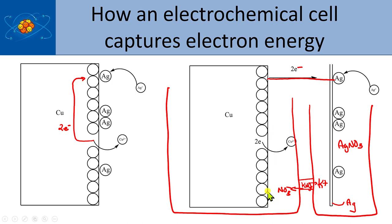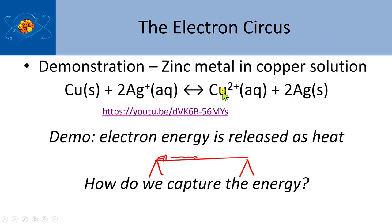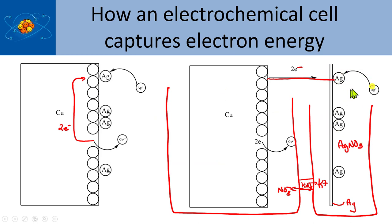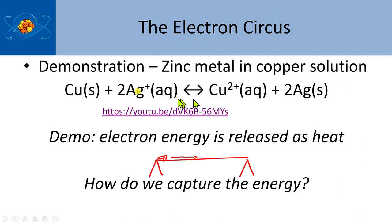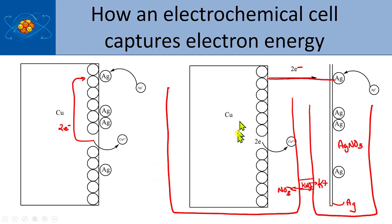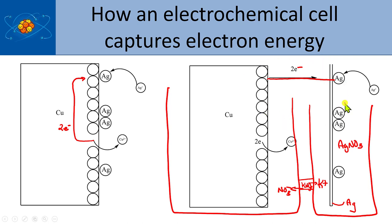In essence, we separate the half-reactions: the copper half-reaction on one side, and the silver half-reaction — silver ion to silver metal — on the other. We put each in its own container, connect them to transfer electrons through a wire, and that energy can run a flashlight or a laptop. This is how all traditional batteries are made.